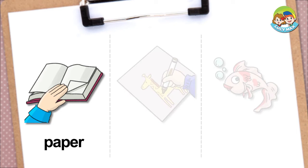Paper. This is a book. The white part is paper. Someone folds the paper a little. We use paper to make a book. We use paper to write on. What else do we use paper for?